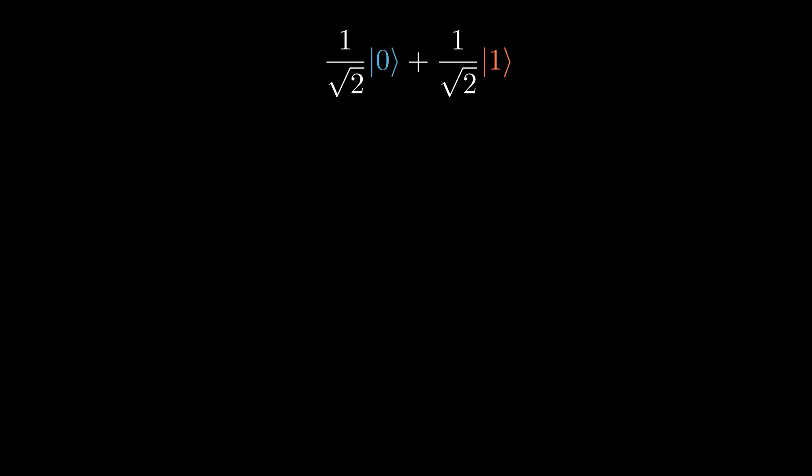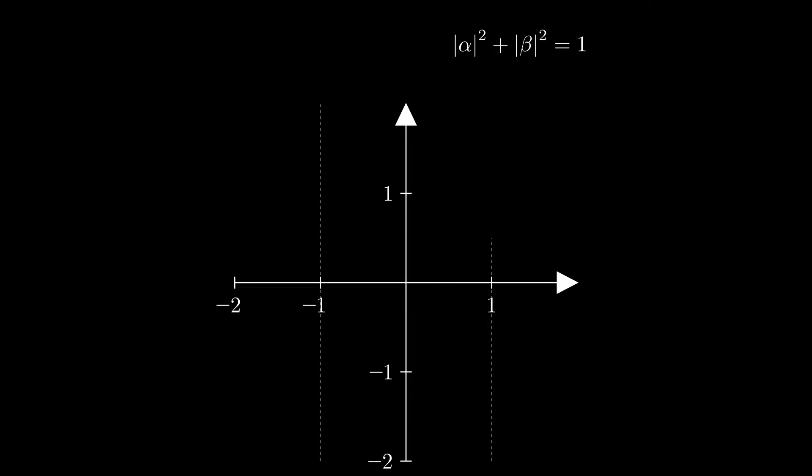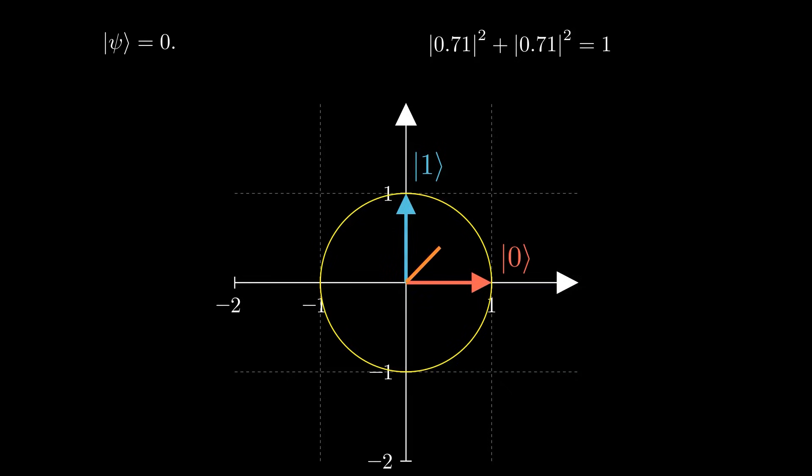These coefficients of the 0 ket and 1 ket are called amplitudes, and you can think of them as related to the probability of getting that result when you measure the qubit. If we take the absolute value and square it, that gives us the probability of getting that measurement. This is called the normalization constraint. It ensures that the total probability is exactly 1. Anything different is a logical contradiction. You might notice that this equation looks like that of a unit circle with radius 1, and that's exactly what's going on here. Our two amplitudes are acting like coordinates, and since we're squaring them to get probability, we end up with a unit circle.